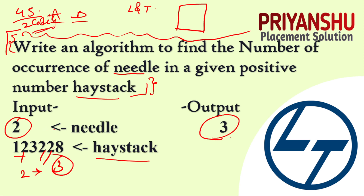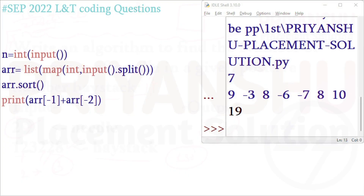This is a very easy question — we can solve it in a single line. First take the needle as an integer input, and next take the haystack number also as an integer input. Make sure both inputs are integers.